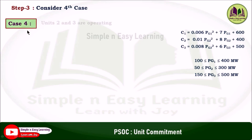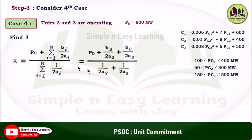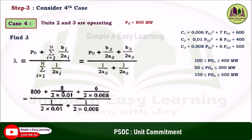Step three: consider the fourth case. In case 4, unit 2 and unit 3 are operating, and the power demand is 800 megawatt. We find lambda using the formula: lambda equals pd plus summation of bi over 2ai, divided by summation of 1 over 2ai, considering only unit 2 and unit 3. Substituting b2, b3, a2, and a3 values from the cost functions gives lambda equal to 14.